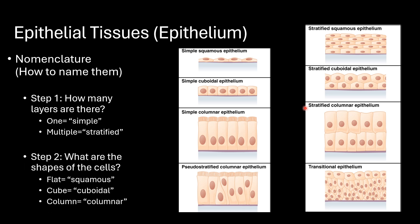The next step is to identify the overall shape of the cells. If they are flat, they're considered squamous. So here we have simple squamous epithelium versus stratified squamous epithelium. Note that we name them based on the shape towards the apex. Likewise, here we have cube shape or cuboidal, or column shape or columnar. There are a couple of odd ones we'll come back to later.